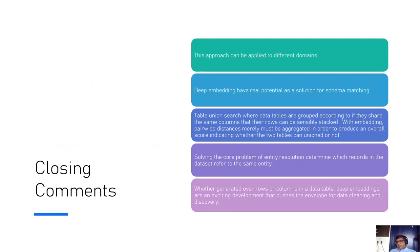Finally, closing comments. The paper in general works, and we've seen the output. This research can be applied in principle, and the approach can be applied to different domains. Deep embeddings have real potential as solution for schema matching. Table union search, where data tables are grouped according to if they share the same column, with embedding pairwise distances merely must be aggregated to produce overall score indicating whether two tables can be unioned or not. Solving the core problem of entity resolution determines which records in the datasets refer to the same entity. Deep embeddings are an exciting development that push the envelope for data cleaning and data discovery. Thank you for attending the session.